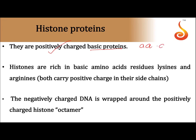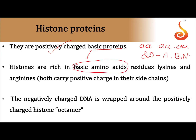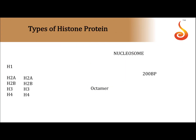Proteins are made up of amino acids. There are 20 amino acids in total — some are acidic, some are basic, and some are neutral. Histone proteins are basic in nature because of two basic amino acids: lysine and arginine. Both carry a positive charge in their side chains.